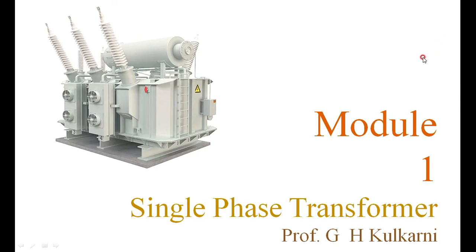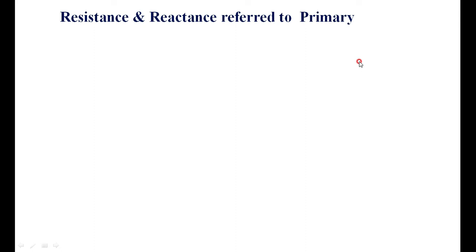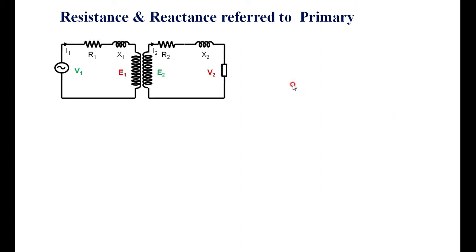Today's session will discuss the equivalent circuit of a transformer. Before drawing the exact or approximate equivalent circuit of a transformer, we need to understand how to transform the resistance and reactance from one side to another — that is, from primary to secondary or secondary to primary. First, we will take resistance and reactance referred to primary, what it means and what is the necessity of this.